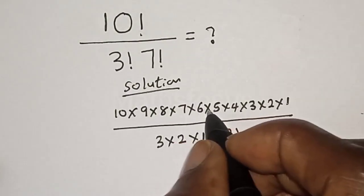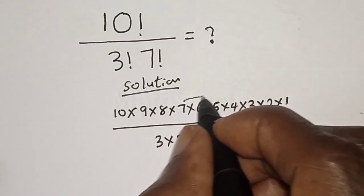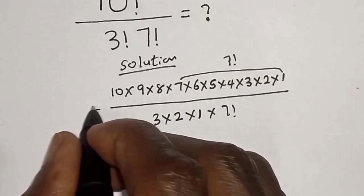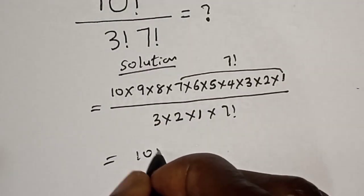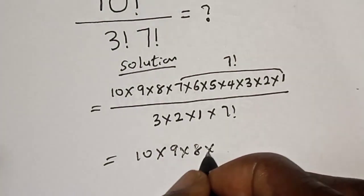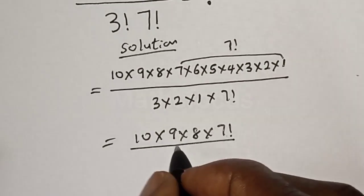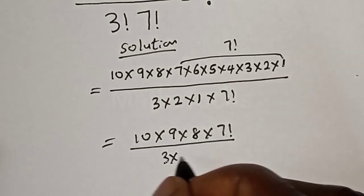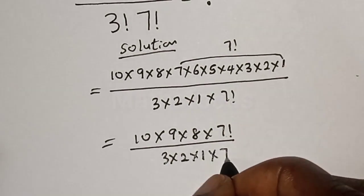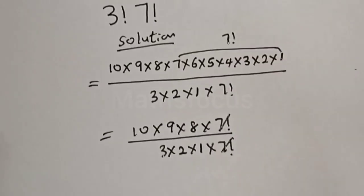If you look at this, from here is 7 factorial — 7 times 6, times 5, times 4, times 3, times 2. So we rewrite as 10 times 9, times 8, times 7 factorial over 3 times 2, times 1, times 7 factorial. This 7 factorial cancels with this 7 factorial.